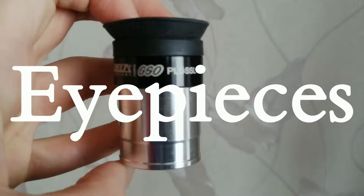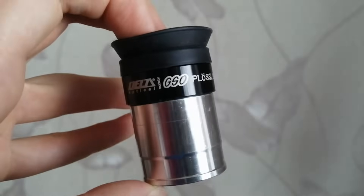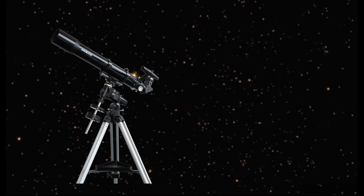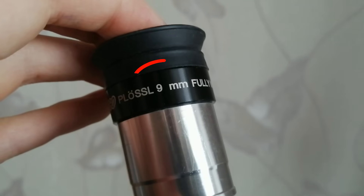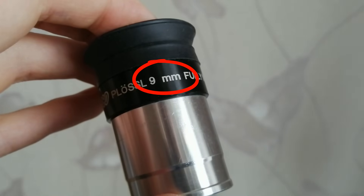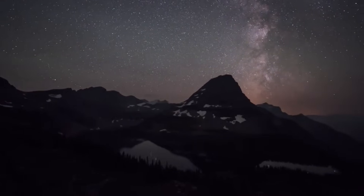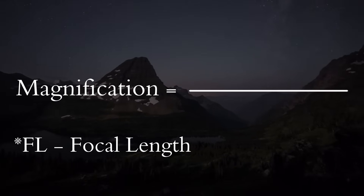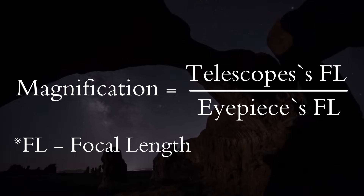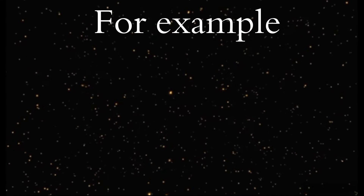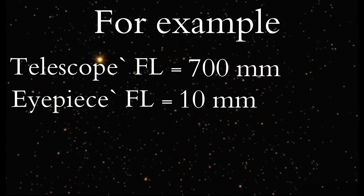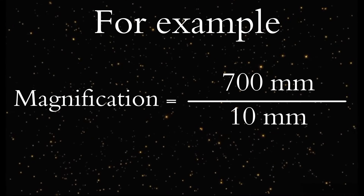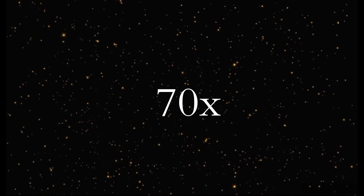Most telescopes are equipped with eyepieces — multi-lens components that allow you to achieve different magnifications. You cannot start observing with just a telescope and no eyepieces. Numbers written on the eyepieces indicate the eyepiece's focal length. With the eyepiece's focal length, you can calculate what magnification your telescope gives: divide the focal length of your telescope by the focal length of the eyepiece. For example, if a telescope has a focal length of 700 mm and you have a 10 mm eyepiece, the magnification is 700 divided by 10, or 70 times.